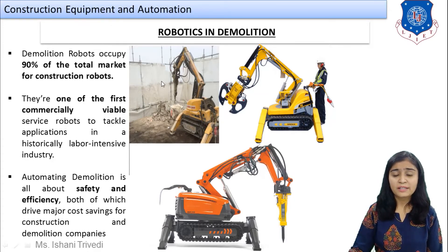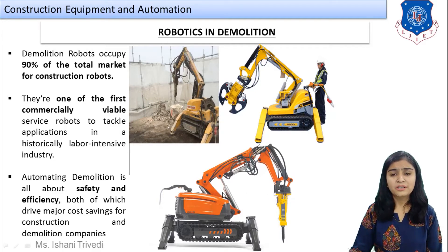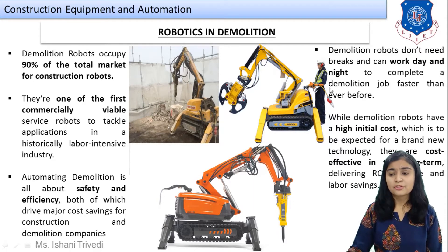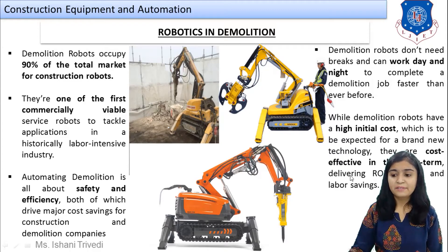Here we can see an automated robotic drilling machine carrying out demolition work, and there is an example of a forklift that can lift material simultaneously. Always remember these are semi-autonomous — a controlling operator is always required. Another example shows a robotic machine used to break structures and floors. Demolition robots don't need breaks and can work day and night, completing the job faster. While they have a high initial cost, the overall cost reduces over time, delivering a strong return on investment.